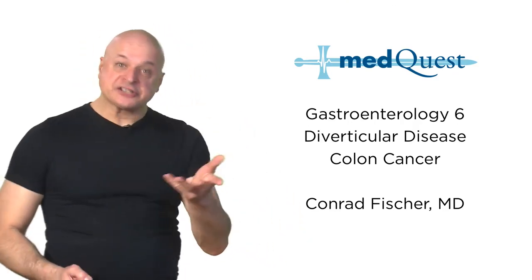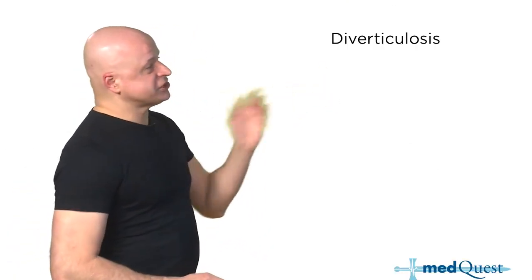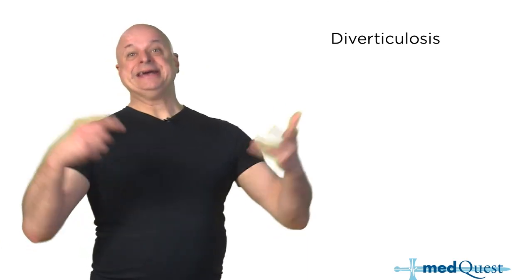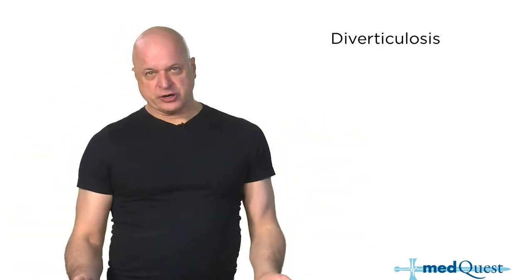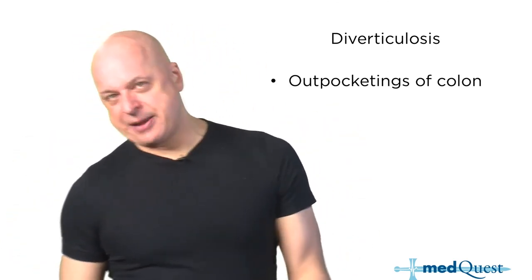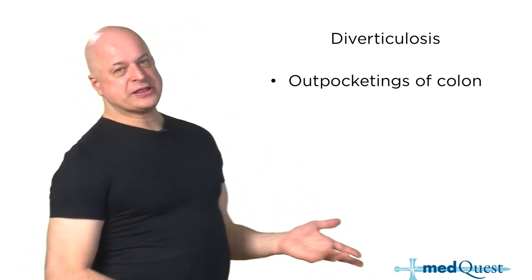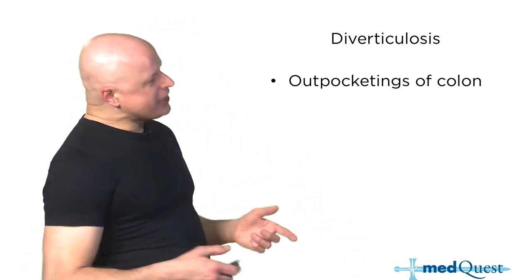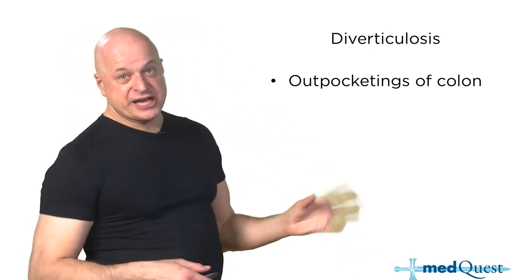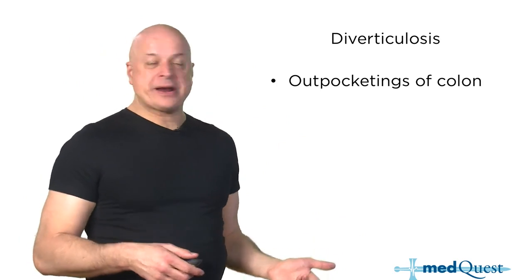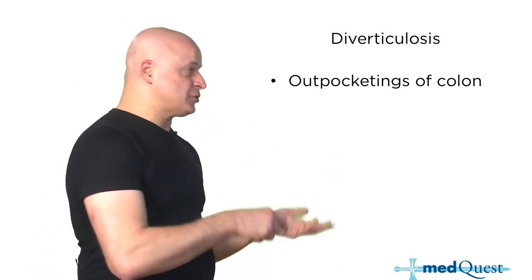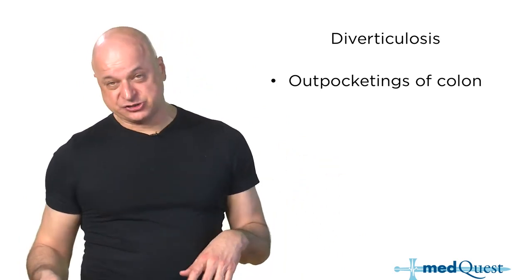Diverticular disease has a very characteristic presentation because it causes pain in the left lower quadrant. You might ask how do you know that's not an ectopic pregnancy or salpingitis? Well, it could be salpingitis, but ectopic pregnancies end when your diverticulosis starts, which is over 50.